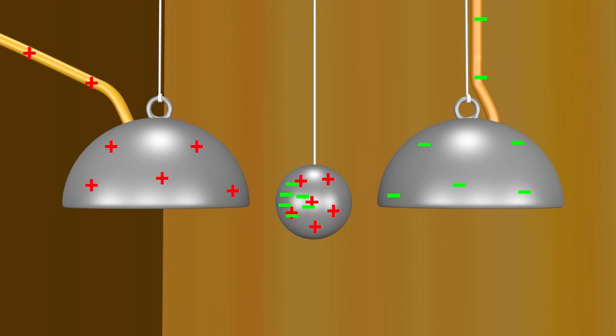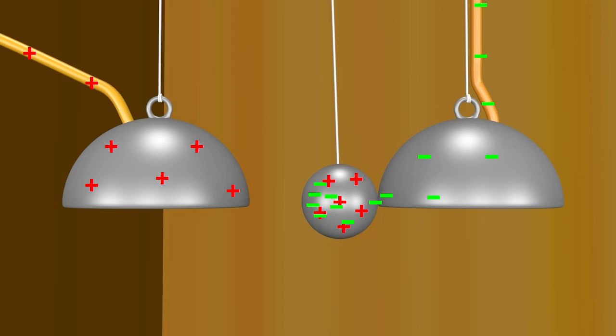While like charges repel each other, unlike charges attract each other. Depending on which dome is closest to the ball, the ball is attracted to that dome, for example, the negative dome. And when it hits, they make a ringing sound. Also when it hits, electrons move from the dome to the ball, to even out the charge between the two.